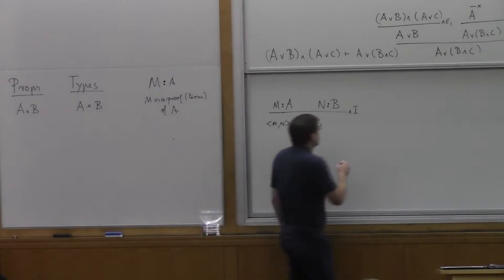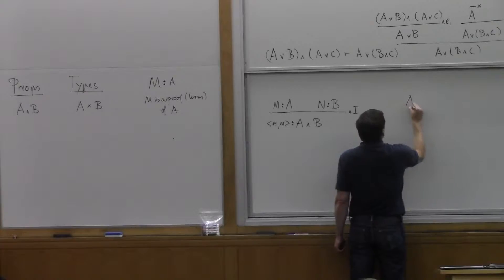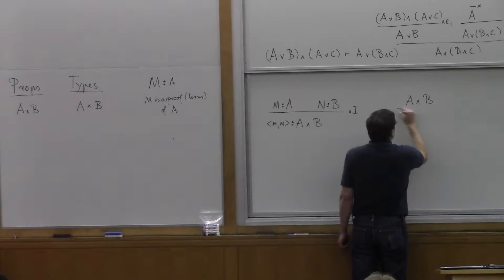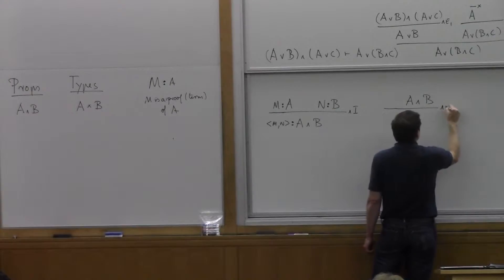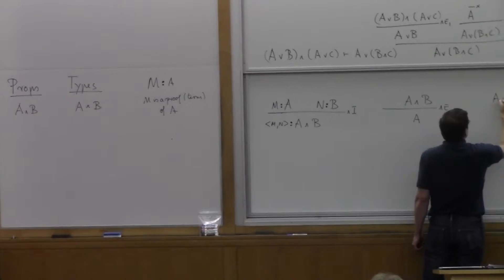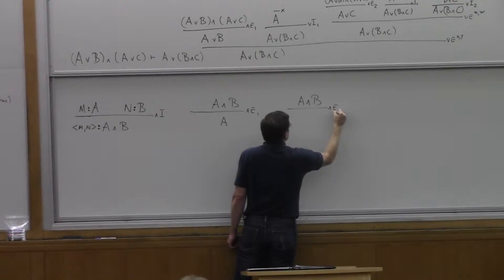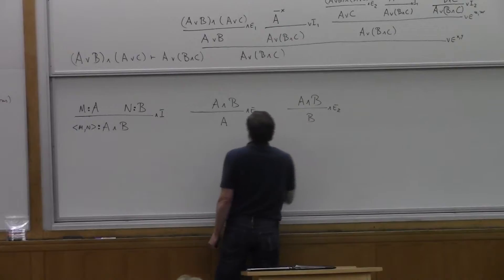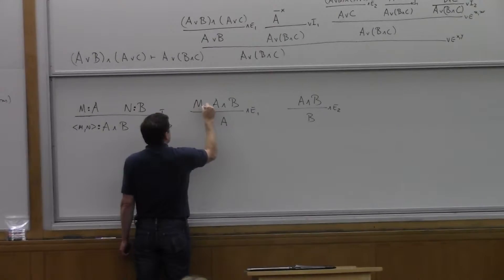So then what do the elimination rules correspond to? The elimination rule says from A and B we can deduce A — that's and-elimination 1. Also, from A and B by the second and-elimination rule we can get B. So let's say we have an arbitrary M of type A and B.